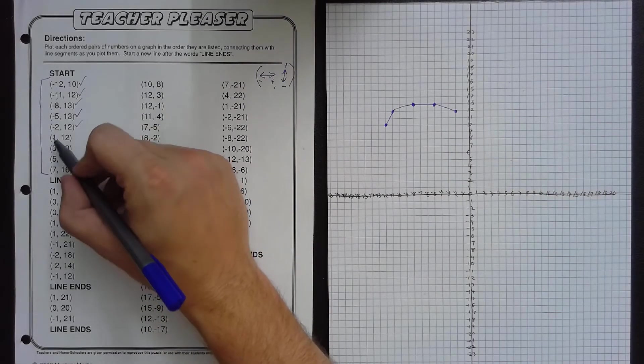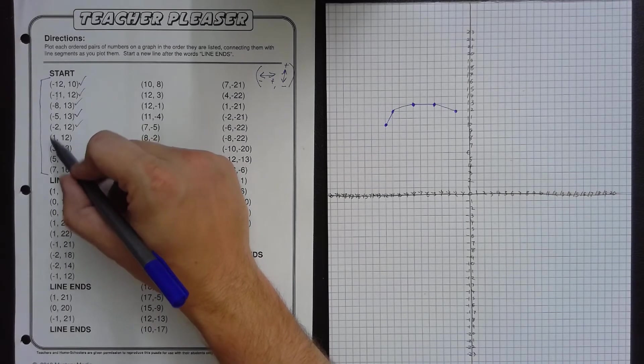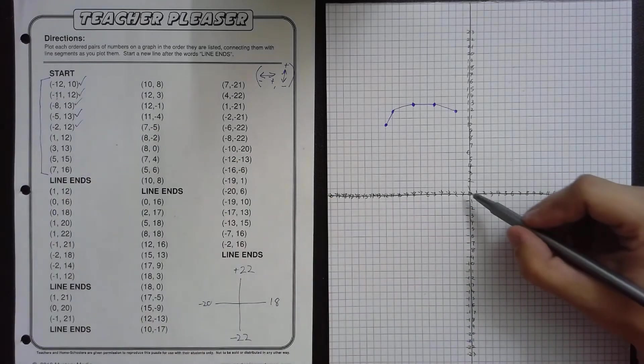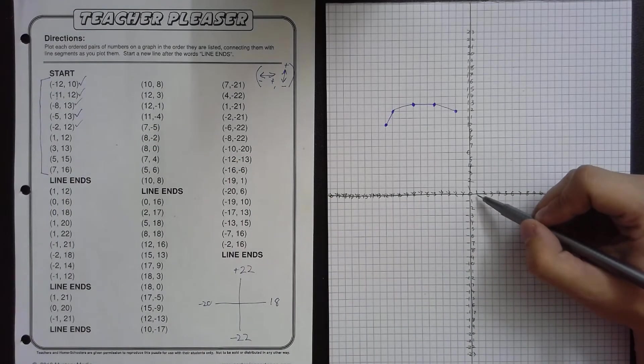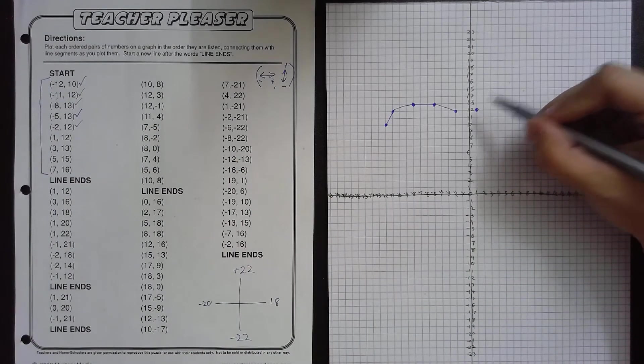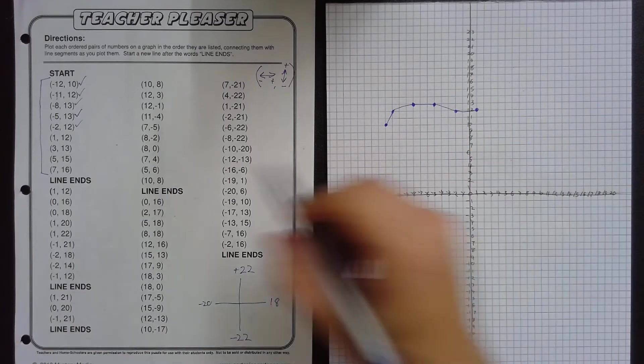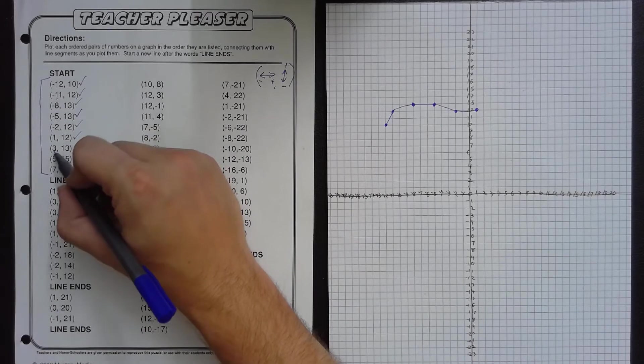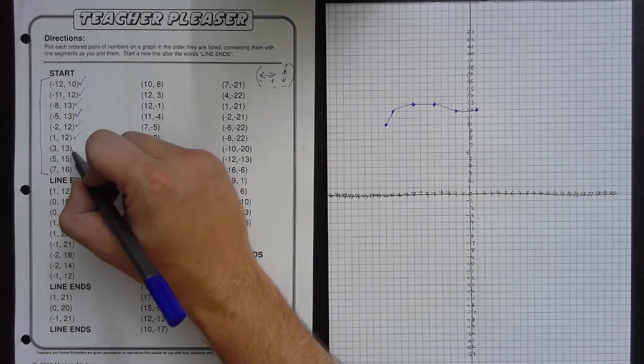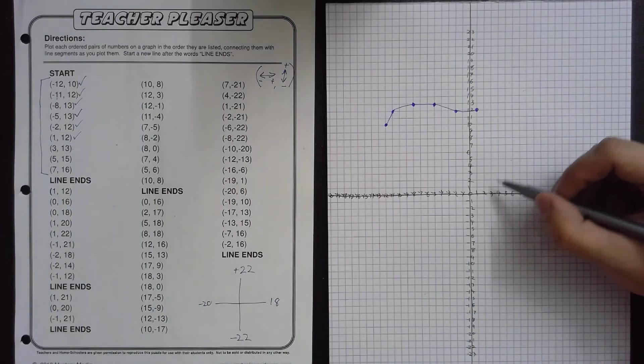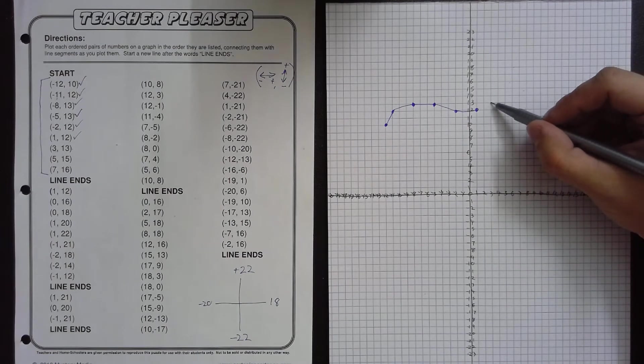Okay. Checkmark. 1, 12. That will go, this one will go to the right and up, because now our first number is positive. So we go to the right by 1 and 12 up. So this one is going to cross over this line.